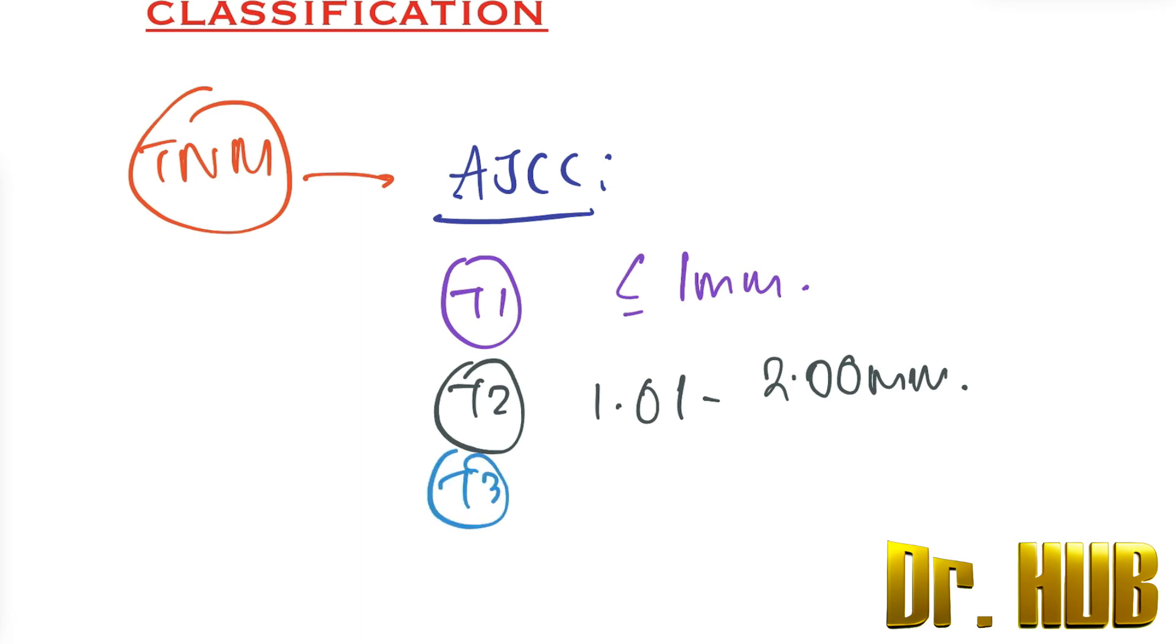Then comes T3. T3 will be 2.01 to 4 mm. And next we have T4. This T4 is going to be greater than 4 mm.